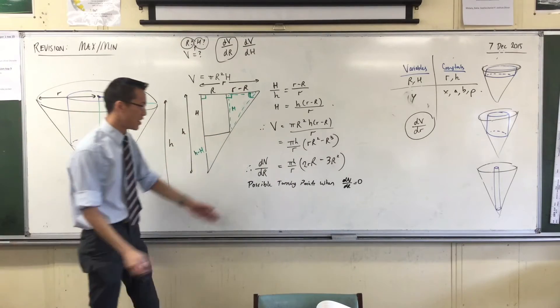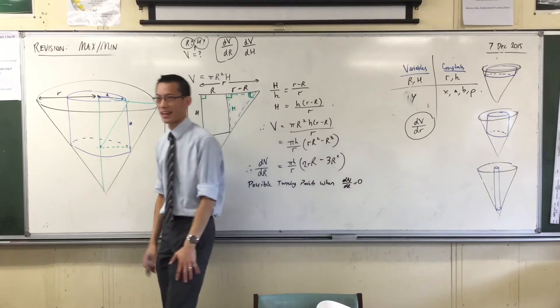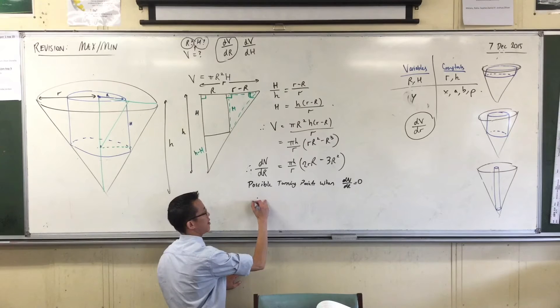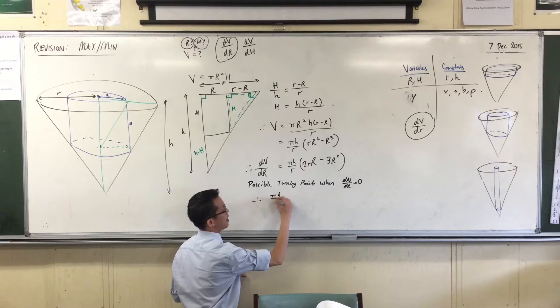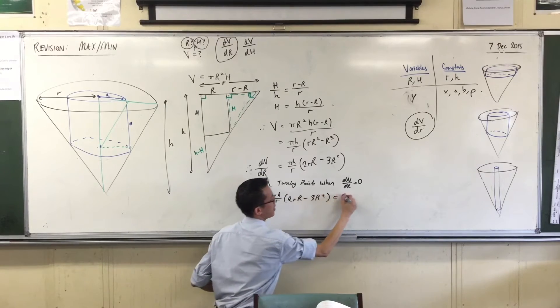Please, I've said it enough times, do not just go write the next line as blah, blah, blah equals zero. For what reason? Because you're doing something, you're looking for something. So, therefore, pi h of r is two r R squared equals zero.